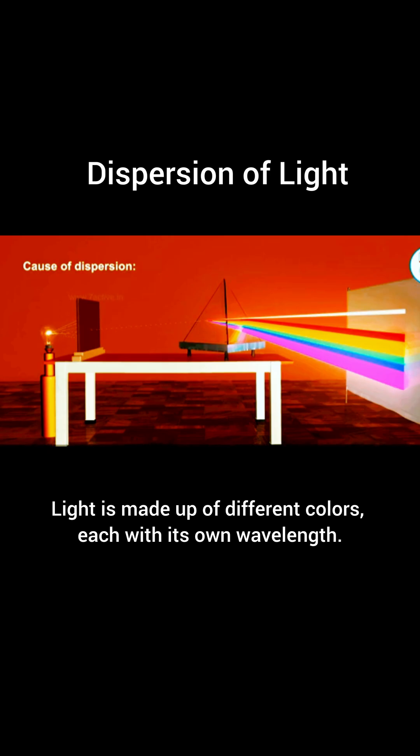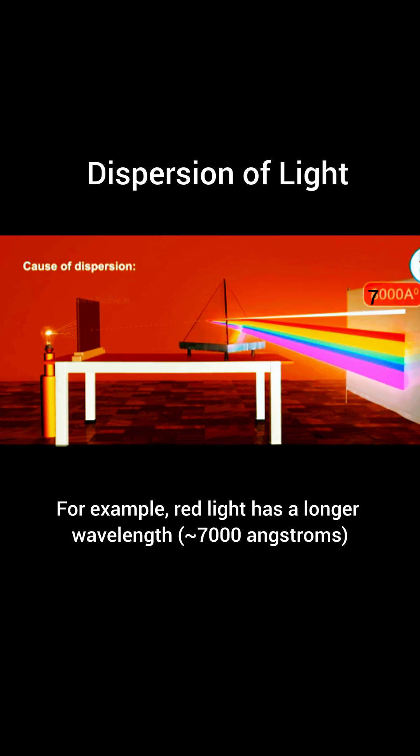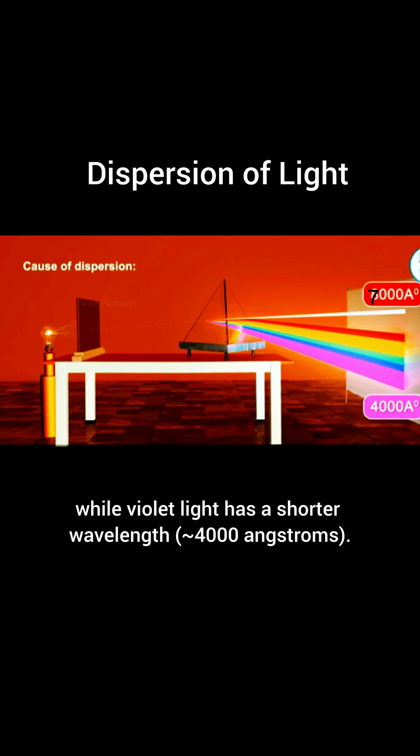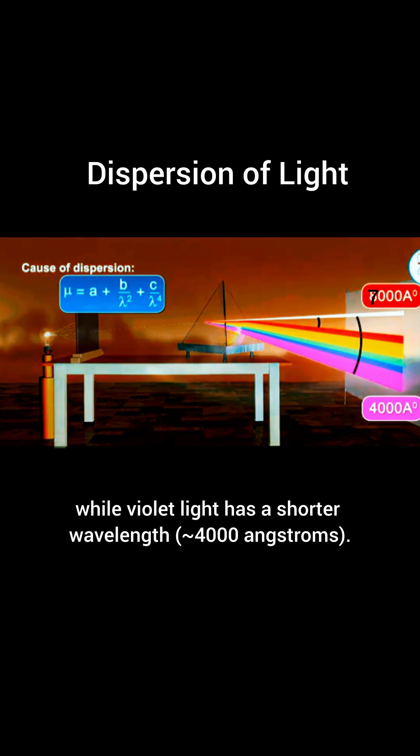Light is made up of different colors, each with its own wavelength. For example, red light has a longer wavelength, approximately 7,000 angstroms, while violet light has a shorter wavelength, approximately 4,000 angstroms.